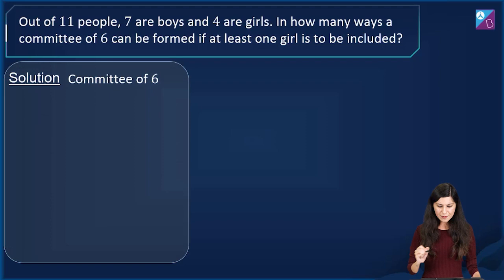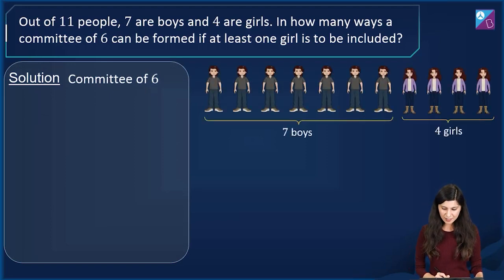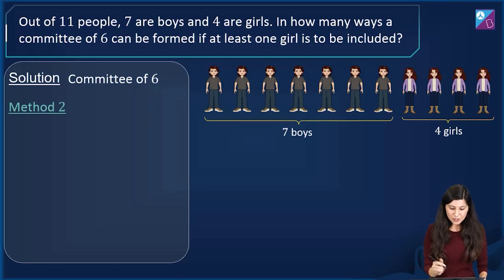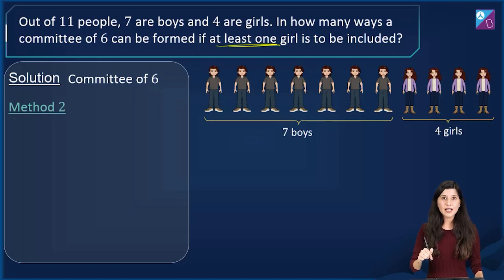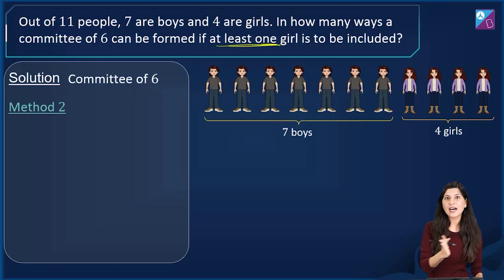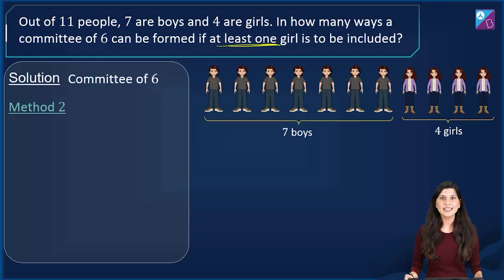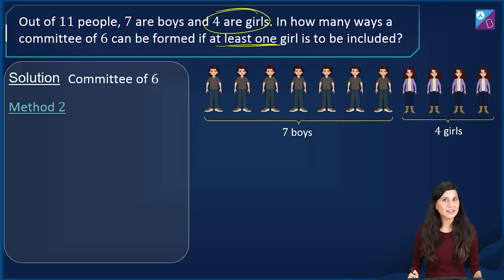Let's move on to method two — same question, same setup: committee of six, seven boys, four girls. Method two is defined on exactness. The question says at least one girl, so I'll be more exact: I can select exactly one girl, or exactly two, or exactly three, or exactly four. I cannot select exactly five girls because there are only four. That's the algorithm for method two — four cases in total.